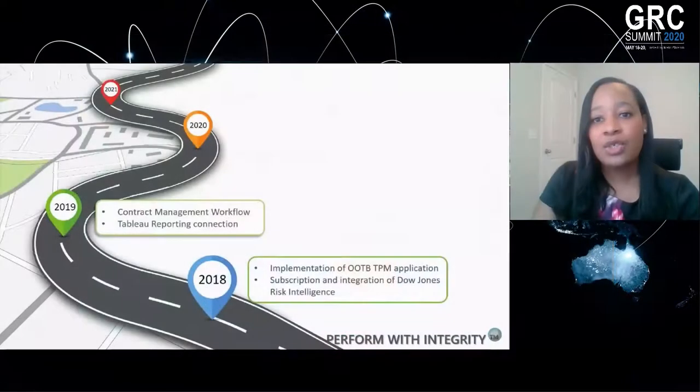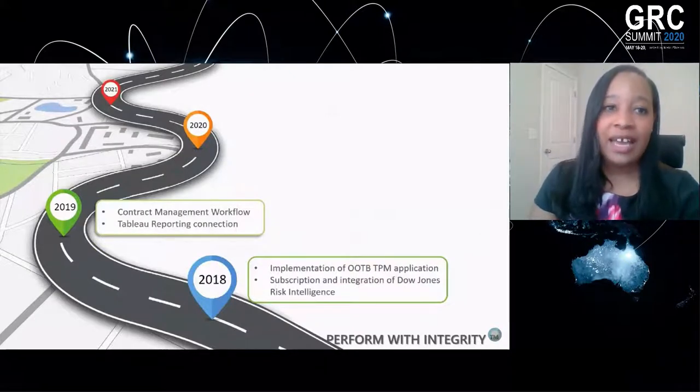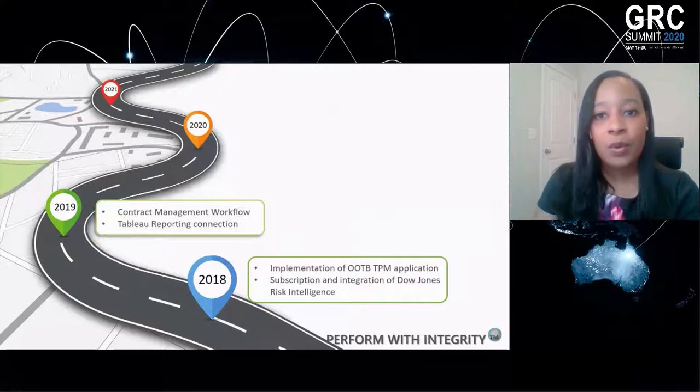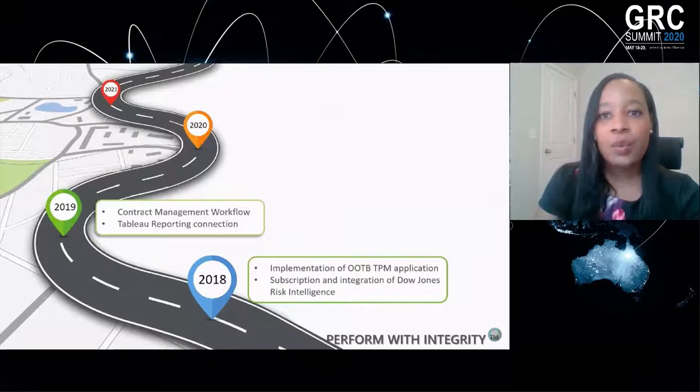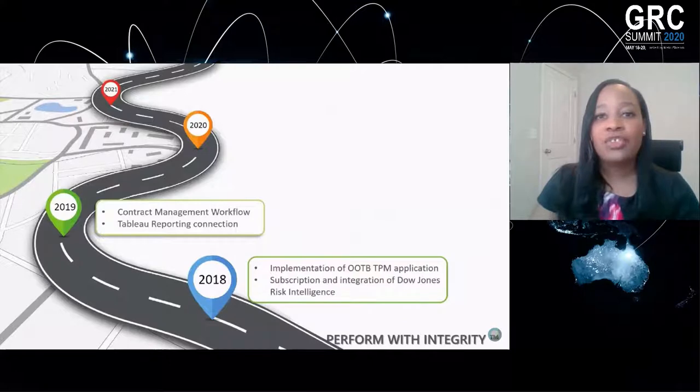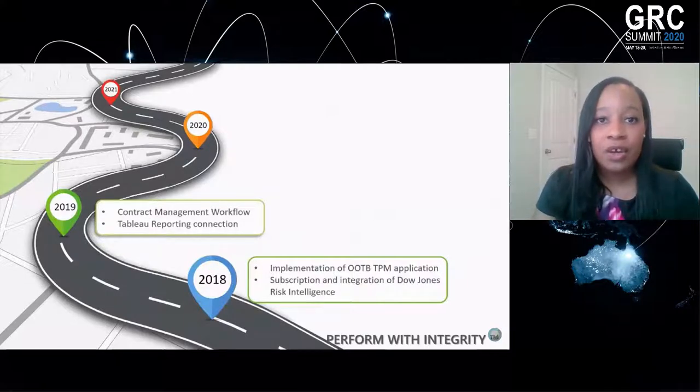In 2019, we took on a bigger project. We implemented the contract management workflow — the contract process all the way from authoring through to execution, with redlining, audit trails, SLAs, reporting, and vendor signature and execution. We incorporated that into our program so that the entire TPRM process was within one place, allowing us to see the entire workflow in one solution. We also implemented a Tableau connection for enhanced reporting, seeing efficiencies in Tableau dashboards for better managing and monitoring our vendor portfolio. That was implemented in 2019, and this year we are making those reports more robust.